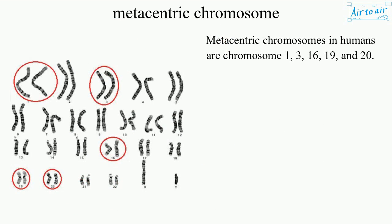Metacentric chromosomes in humans are chromosome 1, 3, 16, 19, and 20.